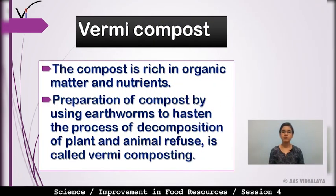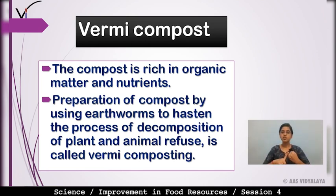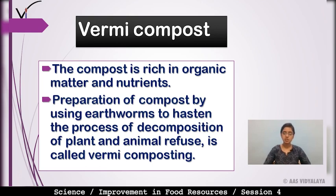Compost is rich in organic matter and nutrients. For vermicompost, we use earthworms so that the decomposition process is fastened. We prepare plant and animal decomposition material, and it is composted through the process of earthworms. The preparation of compost by using earthworms through the process of decomposition of plant and animal refuse is called vermicomposting.